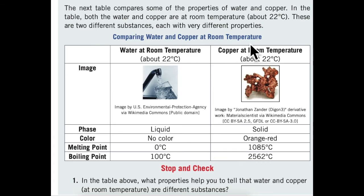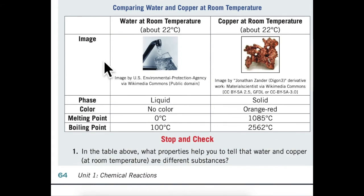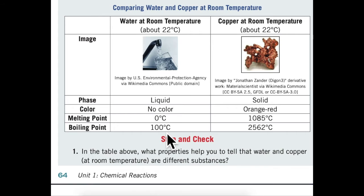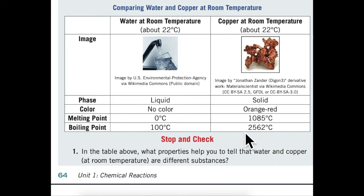Comparing water and copper at room temperature. Water at room temperature, about 22 degrees Celsius: Phase — liquid; Color — no color; Melting point — 0 degrees Celsius; Boiling point — 100 degrees Celsius. Copper at room temperature, about 22 degrees Celsius: Phase — solid; Color — orange-red; Melting point — 1,085 degrees Celsius; Boiling point — 2,562 degrees Celsius.